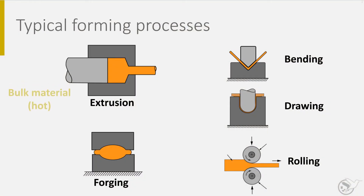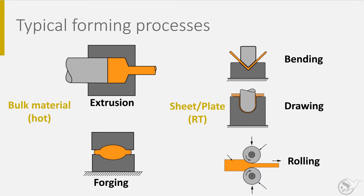The third category is the forming processes. I distinguish here between bulk forming processes like extrusion, forging and rolling, and sheet forming processes like bending and drawing. For bulk forming processes, the material is usually processed at elevated temperatures. This reduces the yield stress and therefore the required forces, and increases the failure strain so more complex shapes can be made in one go. These elevated temperatures are not as high as in casting processes. For example, aluminum alloys melt at about 600–650 degrees Celsius, while extrusion of aluminum alloy takes place between 350 and 500 degrees Celsius, depending on the alloy and the extrusion shape.